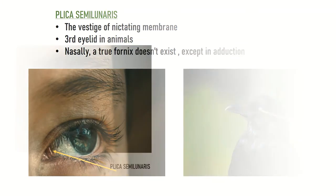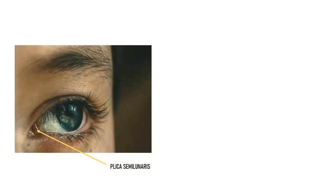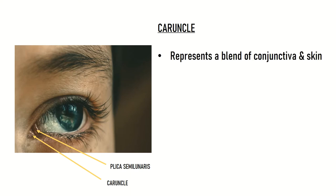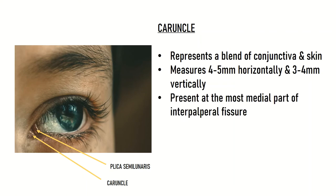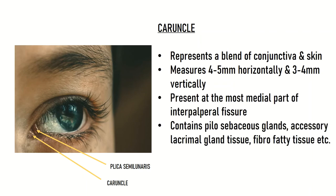Another structure present medially is the caruncle. It represents a blend of conjunctiva and skin. It measures 4 to 5 mm horizontally and 3 to 4 mm vertically, and it is present at the most medial part of the interpalpebral fissure. The caruncle contains pilosebaceous glands, accessory lacrimal gland tissue, fibrofatty tissue, etc.